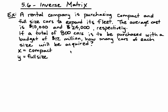We are looking for x and y. We know that when you add x plus y, when you add the number of compact cars plus the number of full-size cars, we are going to get 800 total cars. And we know that the average cost of a compact car is $10,000, and the cost of a full-size car is $24,000. And the total budget is $12 million.